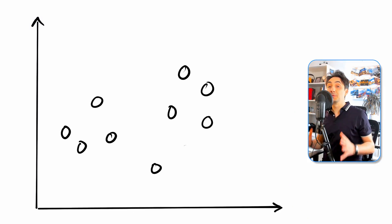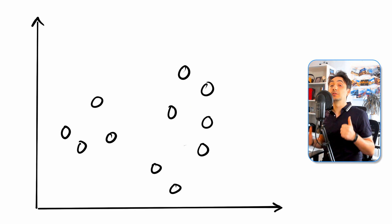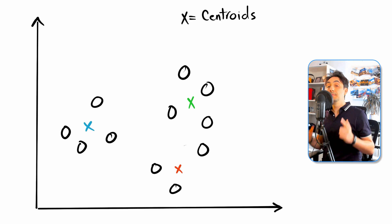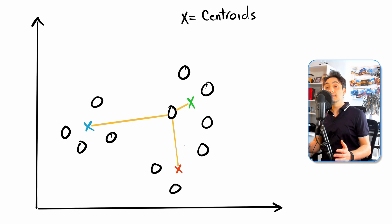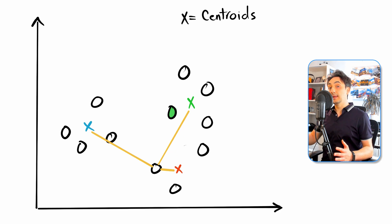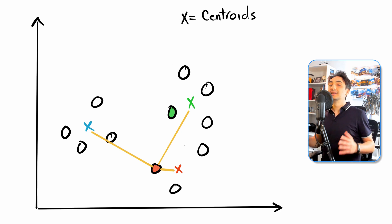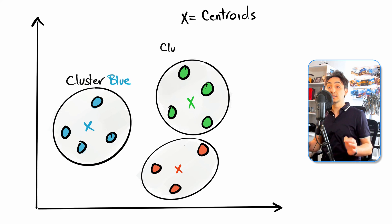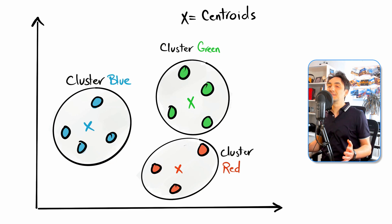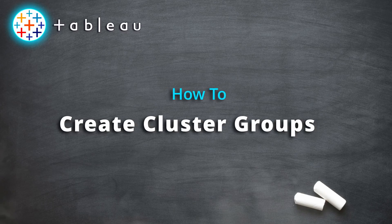Let me show you how the k-means algorithm works. Say we have a set of data points and we define three clusters. The algorithm picks three points called centroids, then assigns each data point to the nearest centroid. For example, one data point goes to the green cluster, the next to the red cluster. The algorithm does this for all data points, and at the end we have three clusters — green, red, and blue. K-means is really simple and easy to implement.